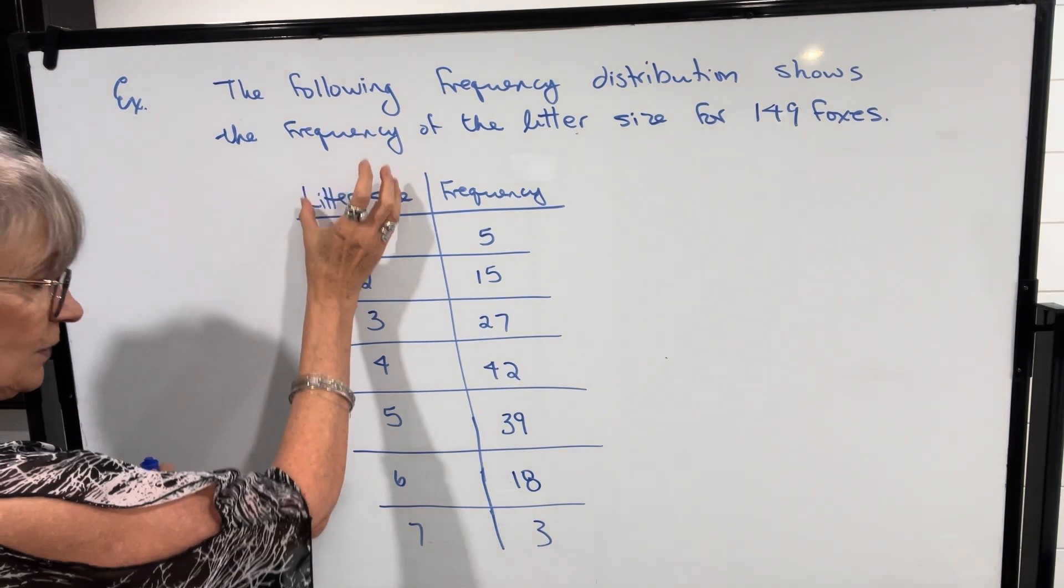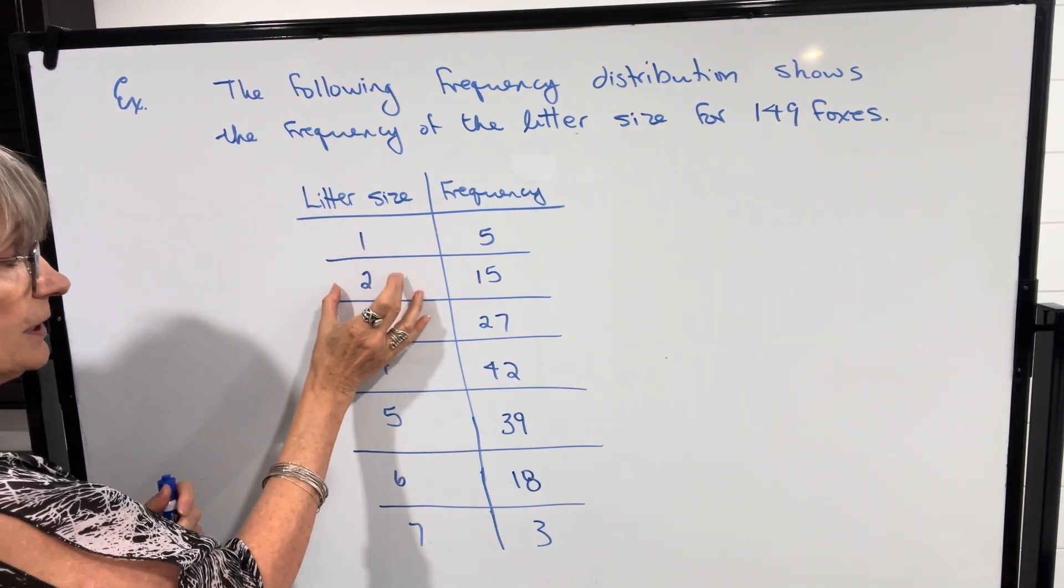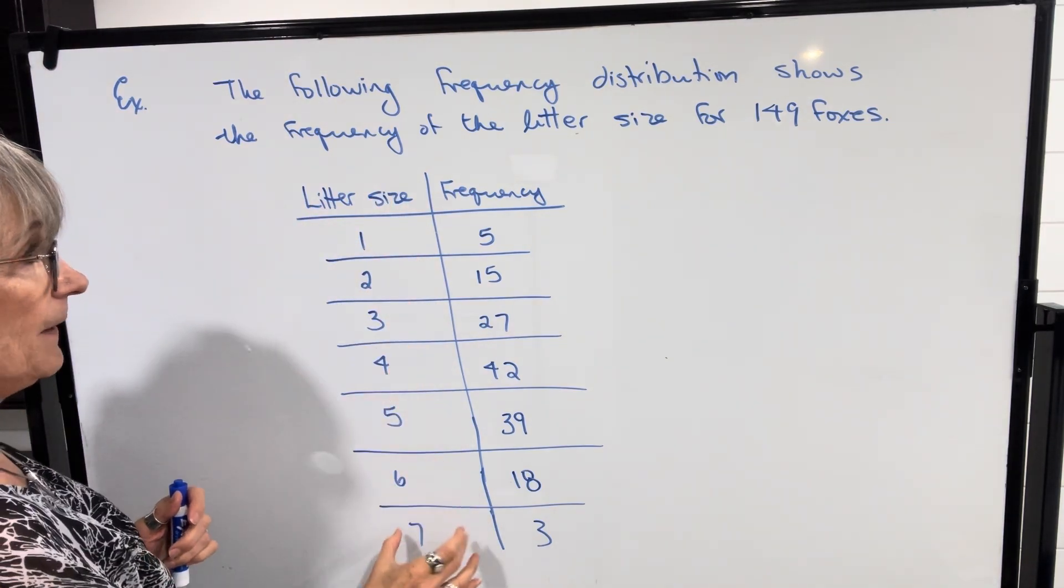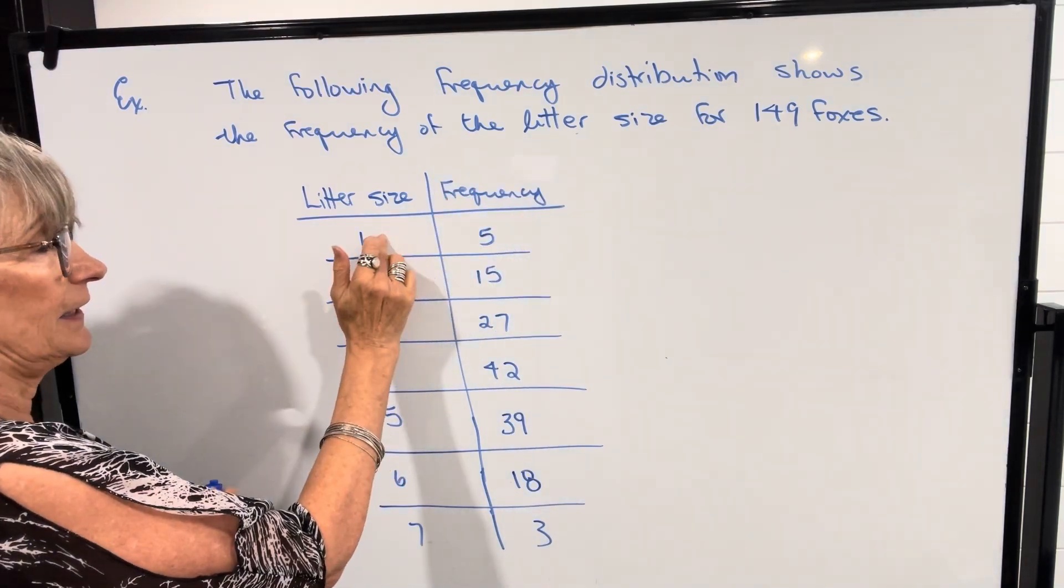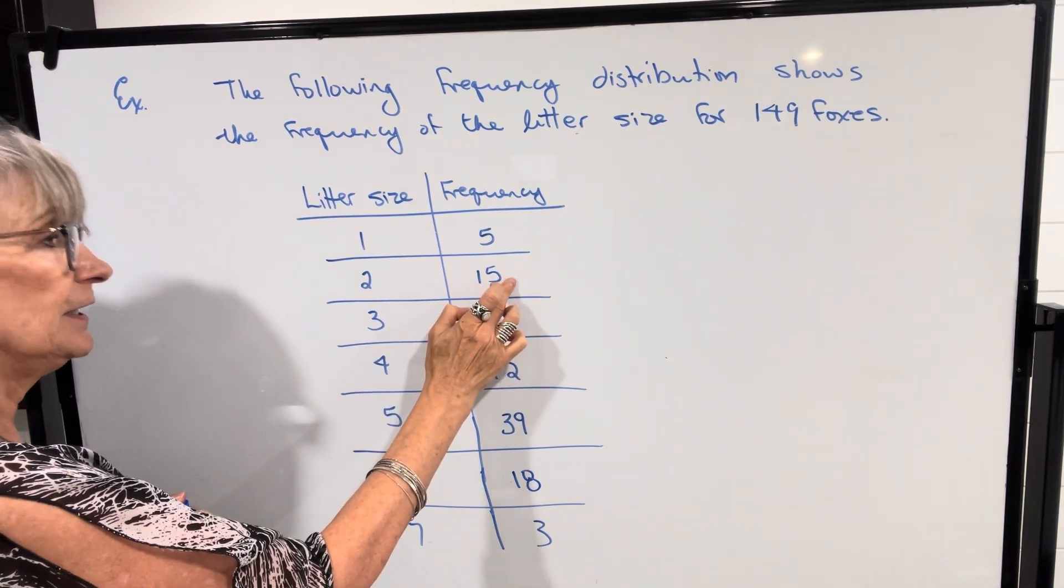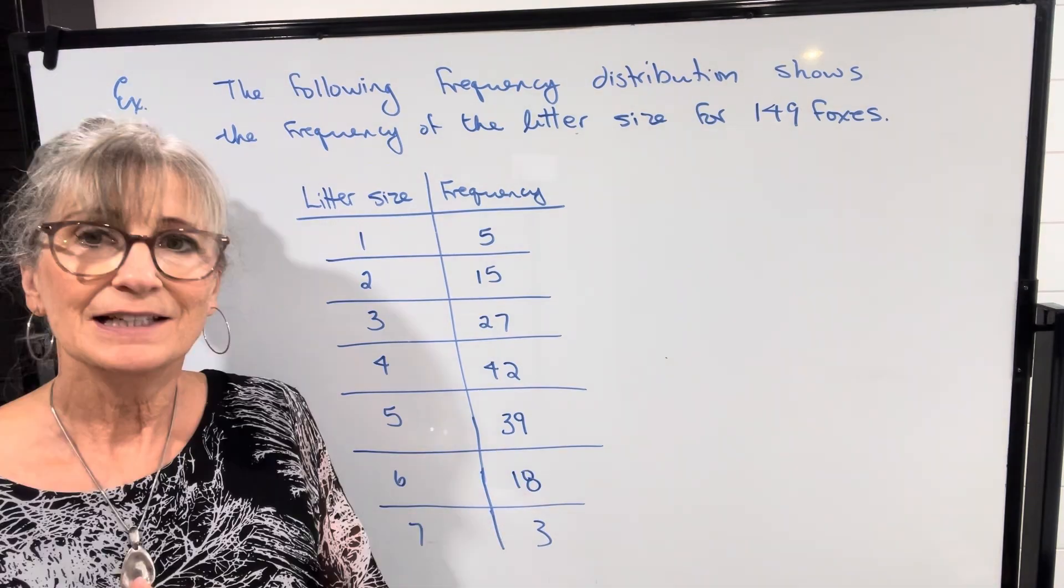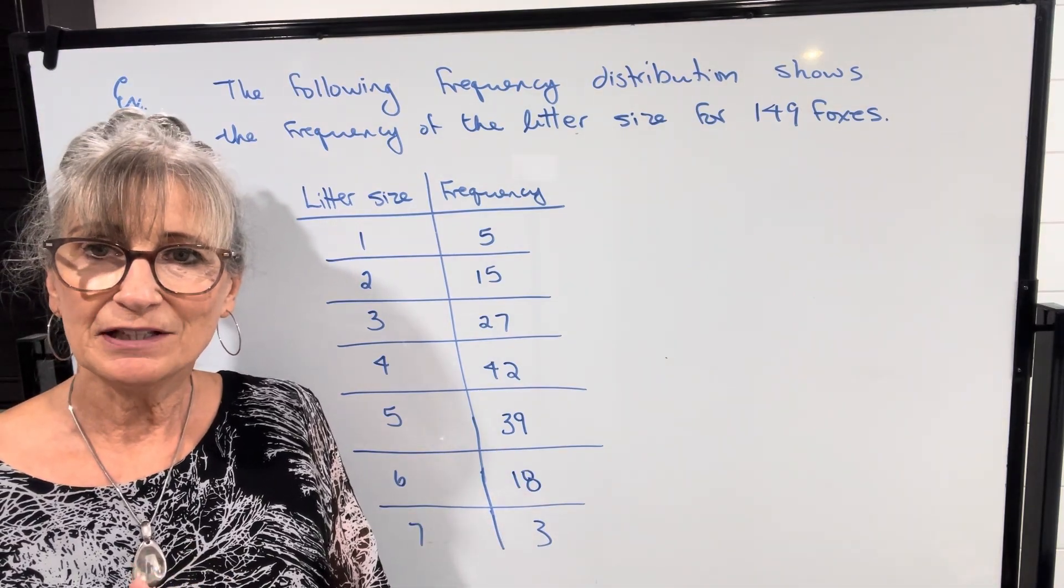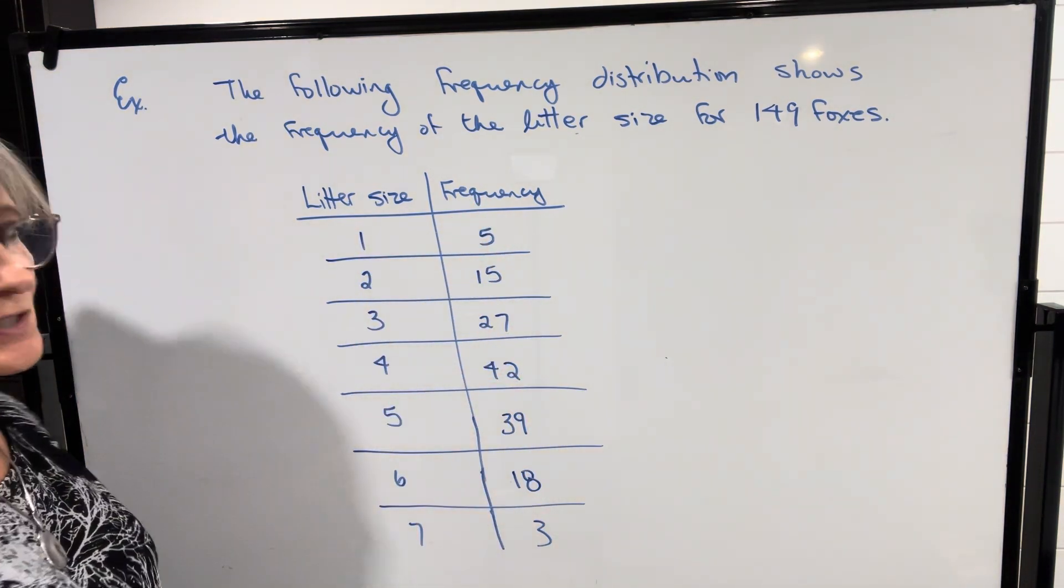We can organize that information in what's called a frequency distribution. One column will be the category, which in this case is the litter size, and the other column will be the number of foxes that have that litter size. So there were five that only had one pup, 15 that had two pups, 27 that had three pups and so on. Now let's take a look at how we find the mean, median, and mode when our data is presented in this form.